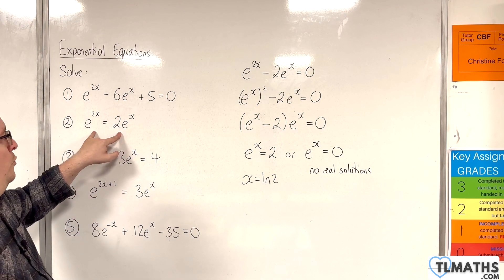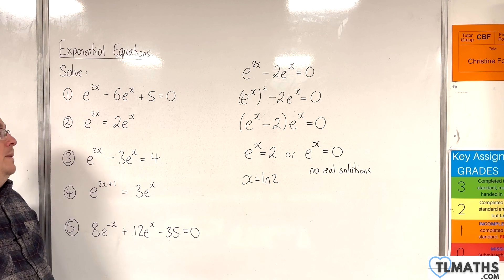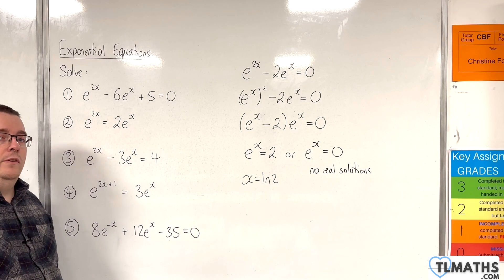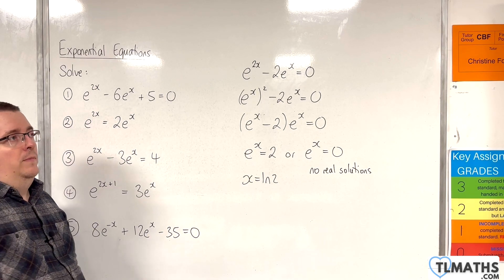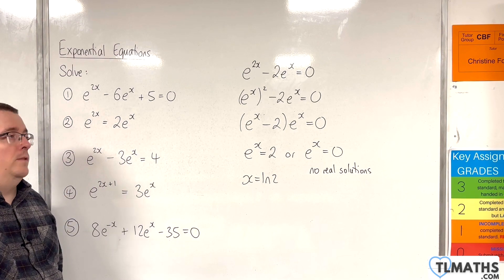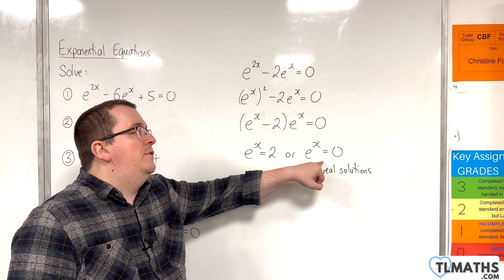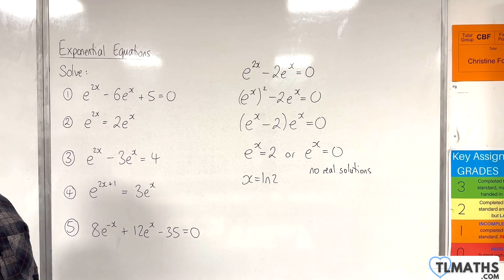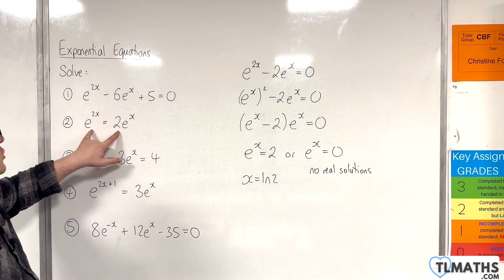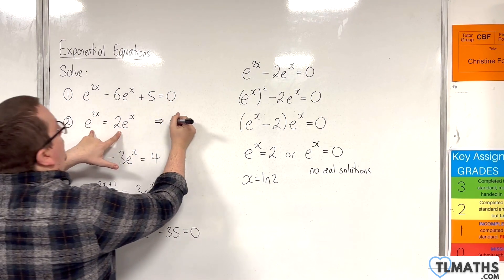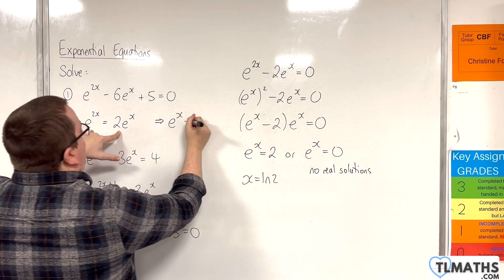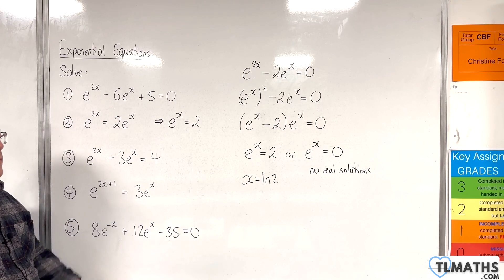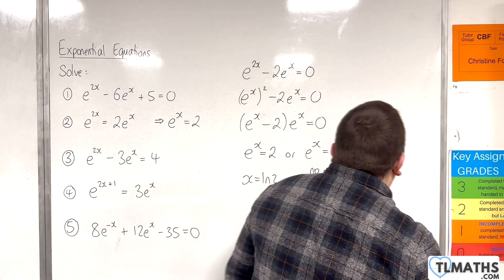However, you could also, at the very start, divide through by e to the x. In general, dividing through by a function can be quite dangerous, mainly because if that function is 0, you will lose a solution. But here, e to the x can never be 0, so dividing both sides by e to the x will not lose any solutions. Doing that gives e to the x on the left-hand side equals 2 on the right, so x is the natural log of 2, and that would be the only solution.